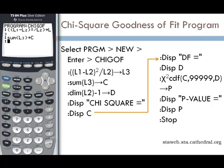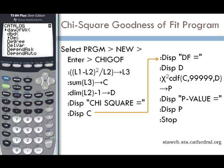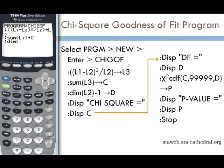Now we want to find the dimension function. We'll go to the catalog again with SECOND ZERO, then press D for dimension and scroll down until we find it. Press ENTER, then L2 (SECOND 2), close parenthesis, minus one, store as D (ALPHA D) for degrees of freedom. Press ENTER.